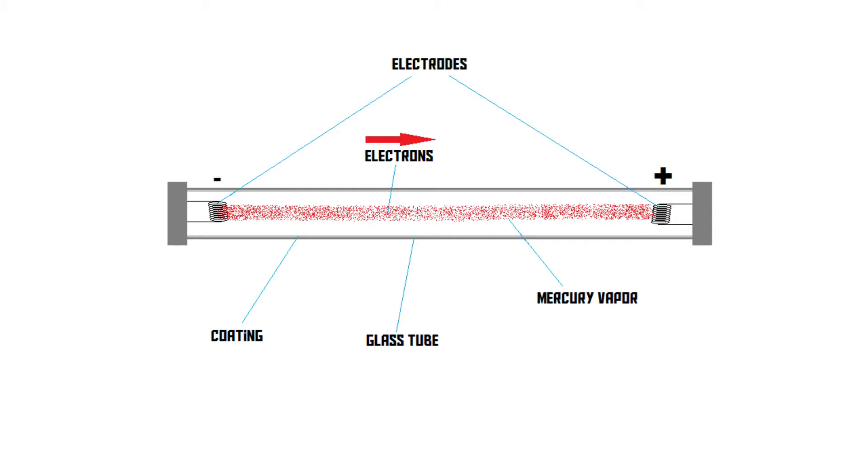Since obviously, positive attracts negative. The reason why we needed to heat up the electrodes first was because that way the electrons can escape the electrode more easily. It is possible to make the lamp work without heating up the electrodes, but then we'd need a much higher voltage.